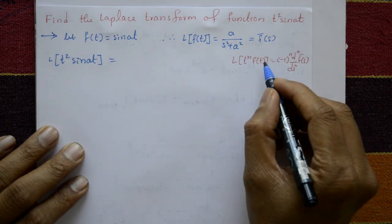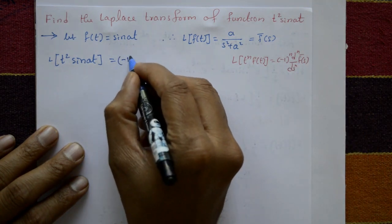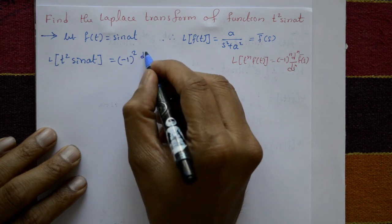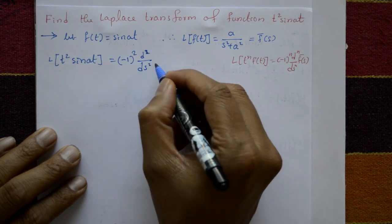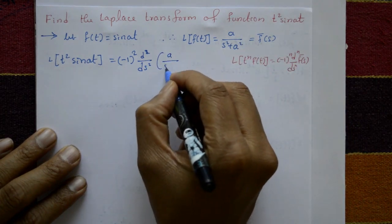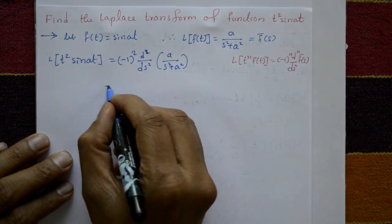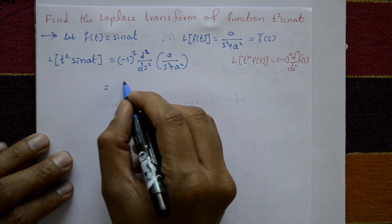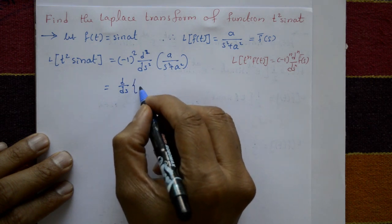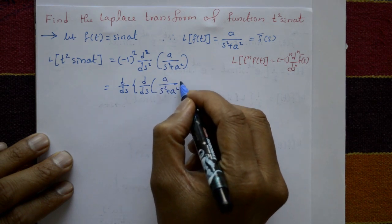For t², take n equal to 2. That gives minus one squared, times d² over ds², applied to F̄(s) = a over s² plus a². Since minus one squared equals plus one, we have d over ds of d over ds applied to a over s² plus a².